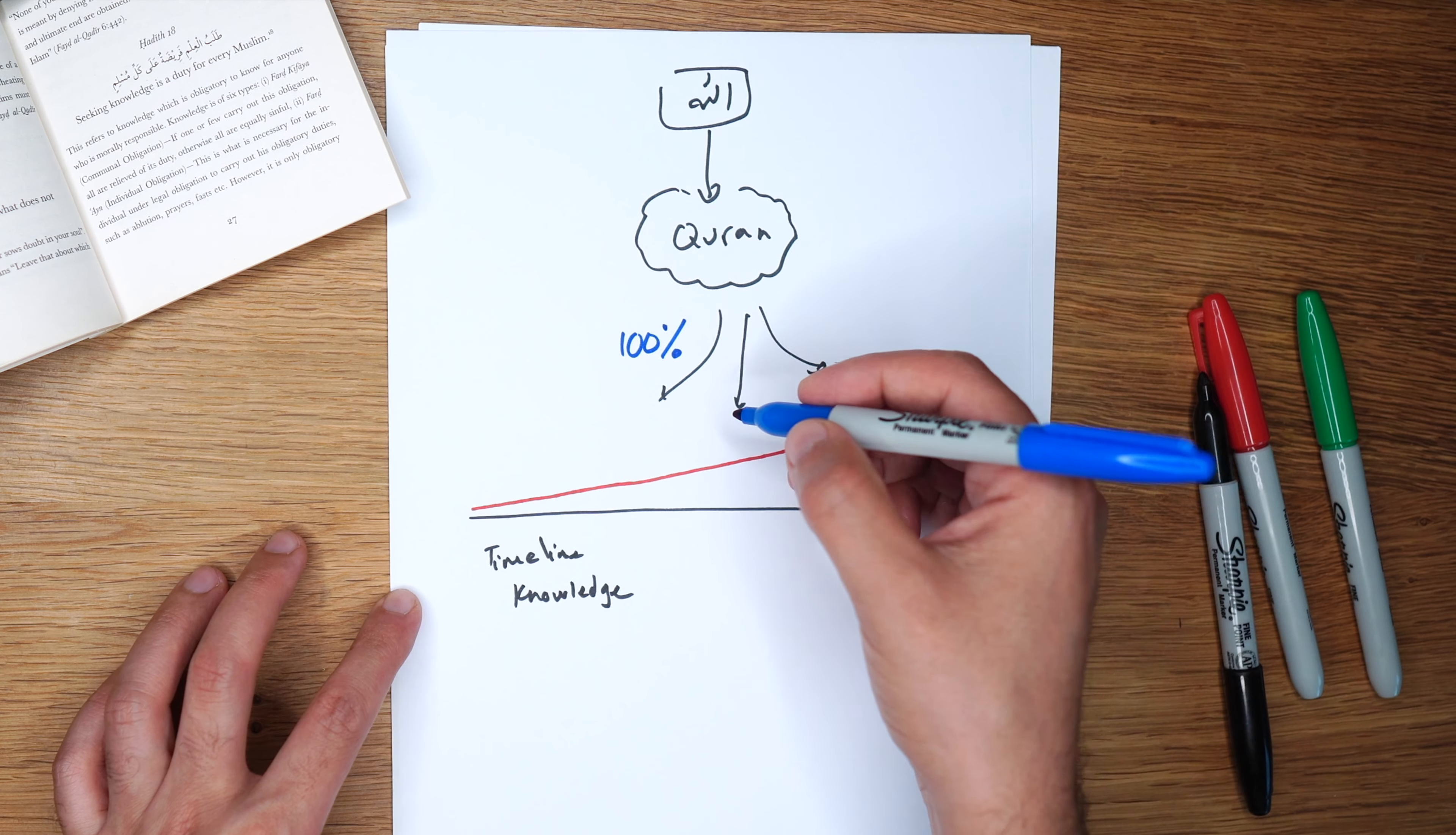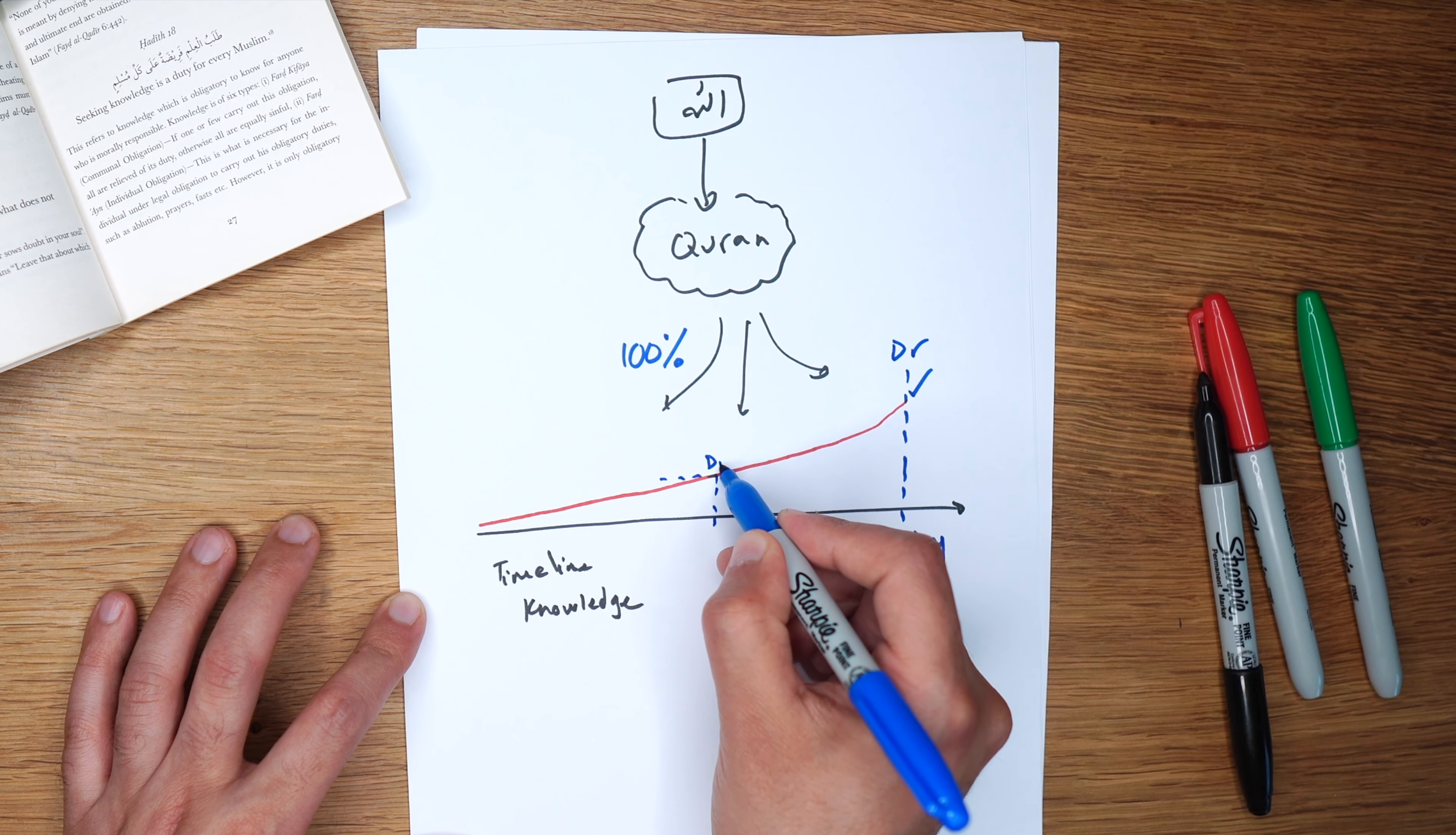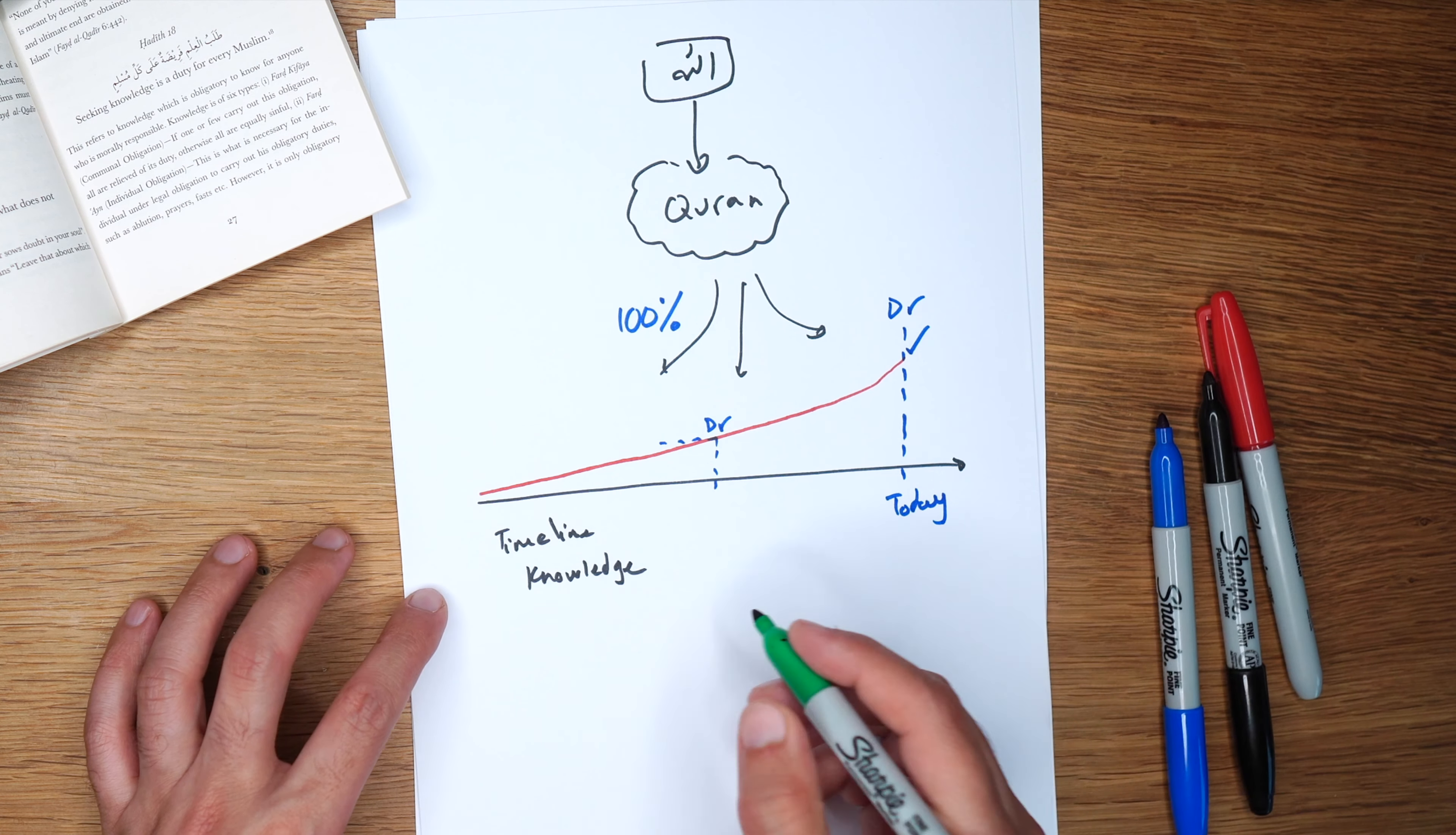If you want to get into any field, you must learn knowledge. A doctor today needs this much knowledge, whereas living back then you would only need this much. Knowledge has increased, but Islamic knowledge actually starts off complete and then as time goes by and society develops, the knowledge of the Quran branches out and gets more detailed.